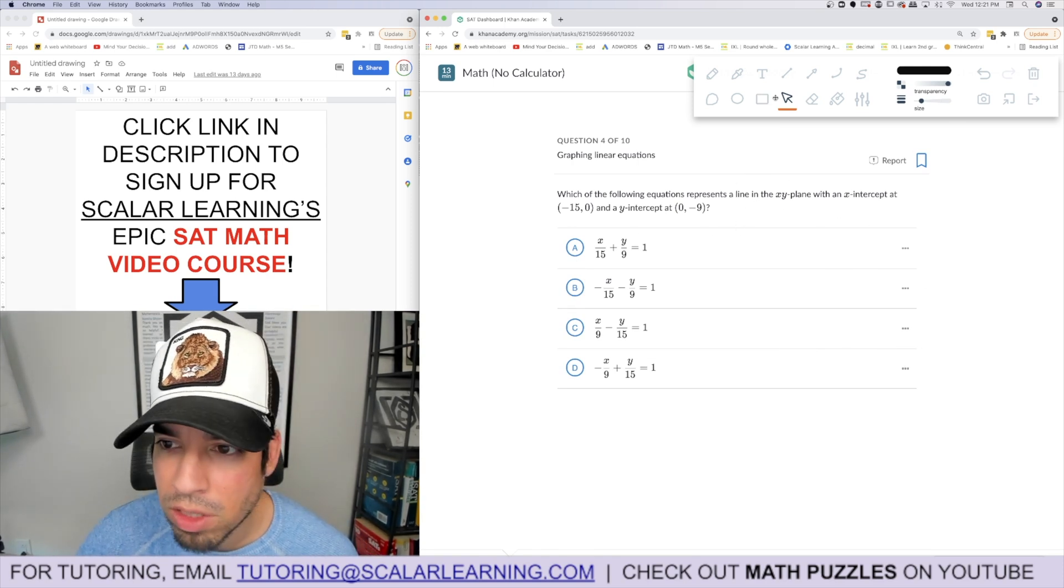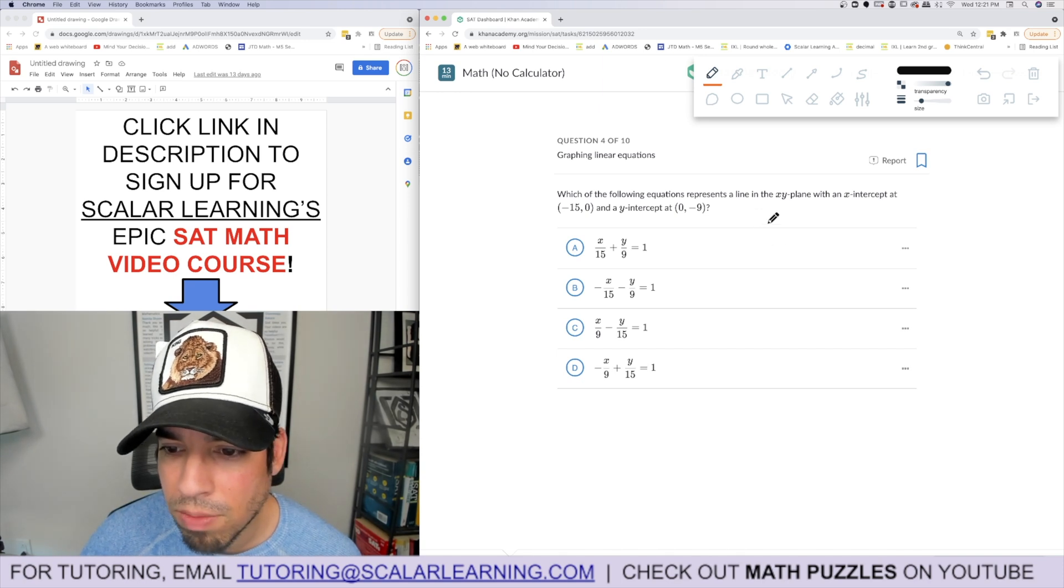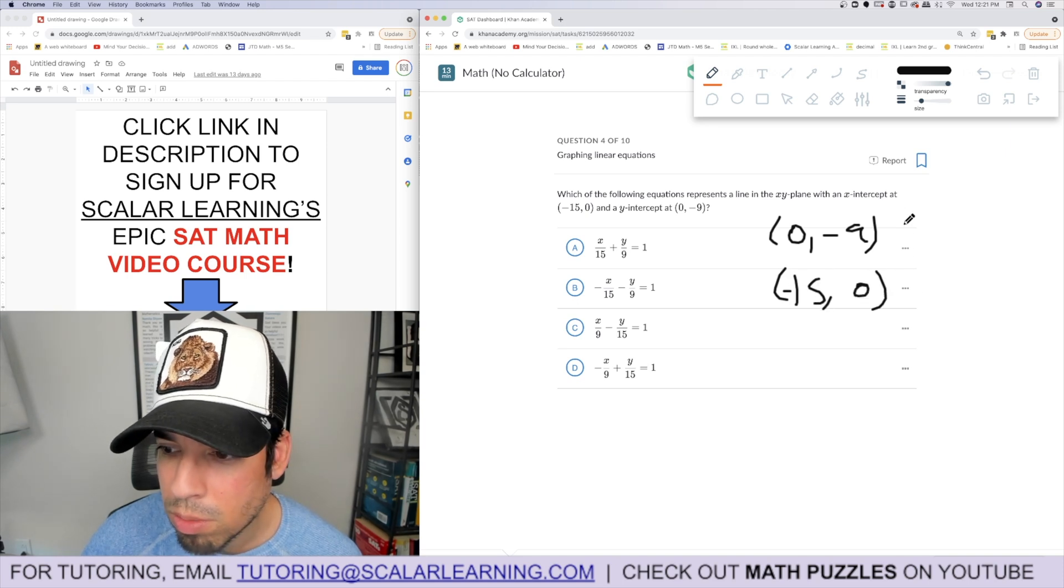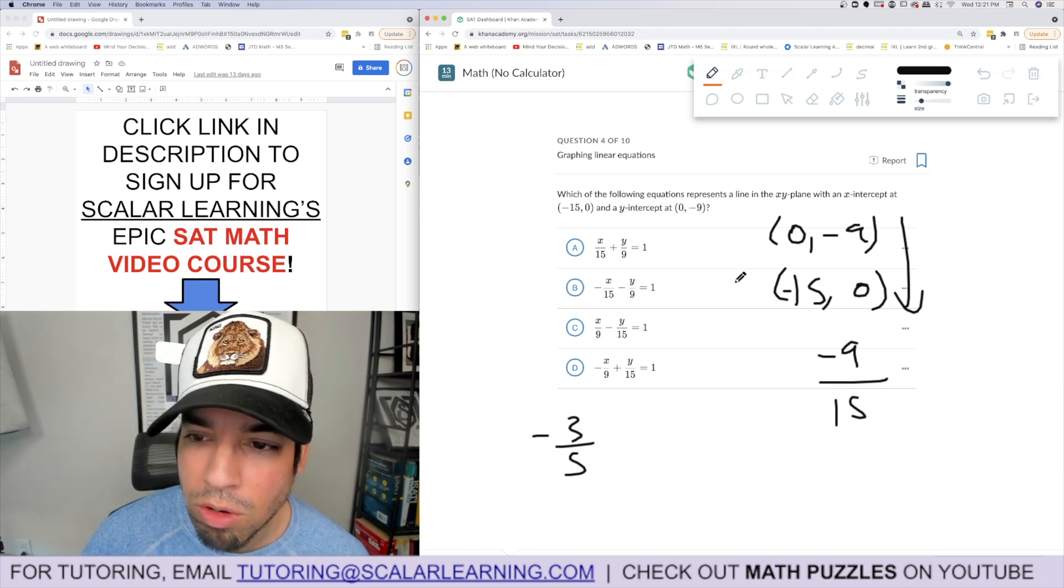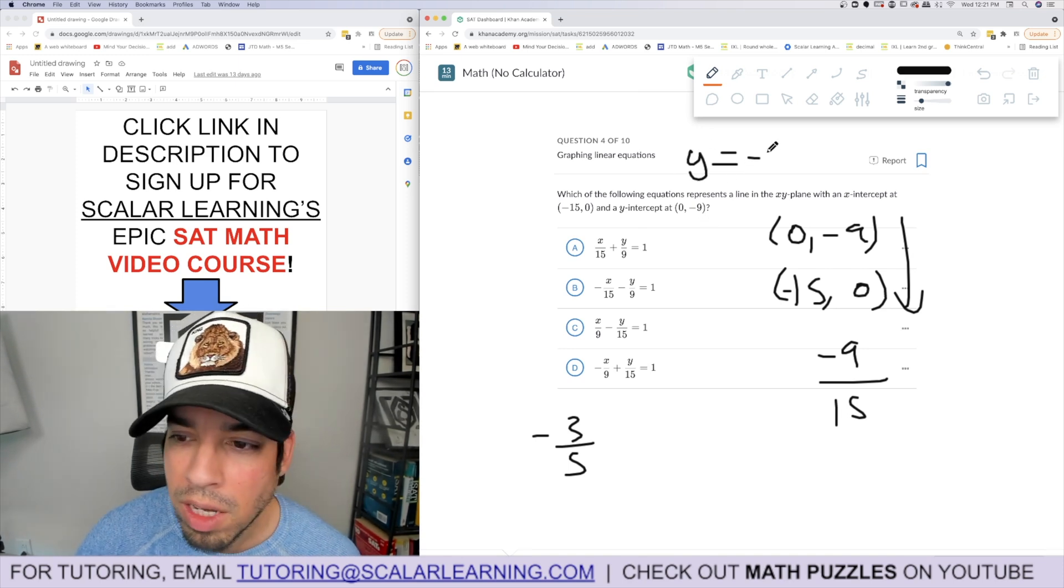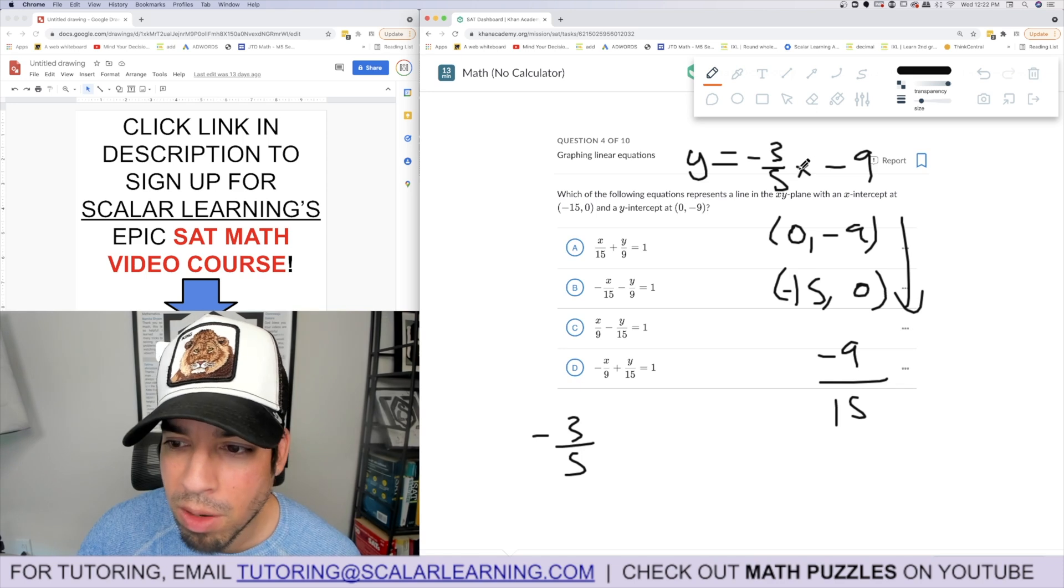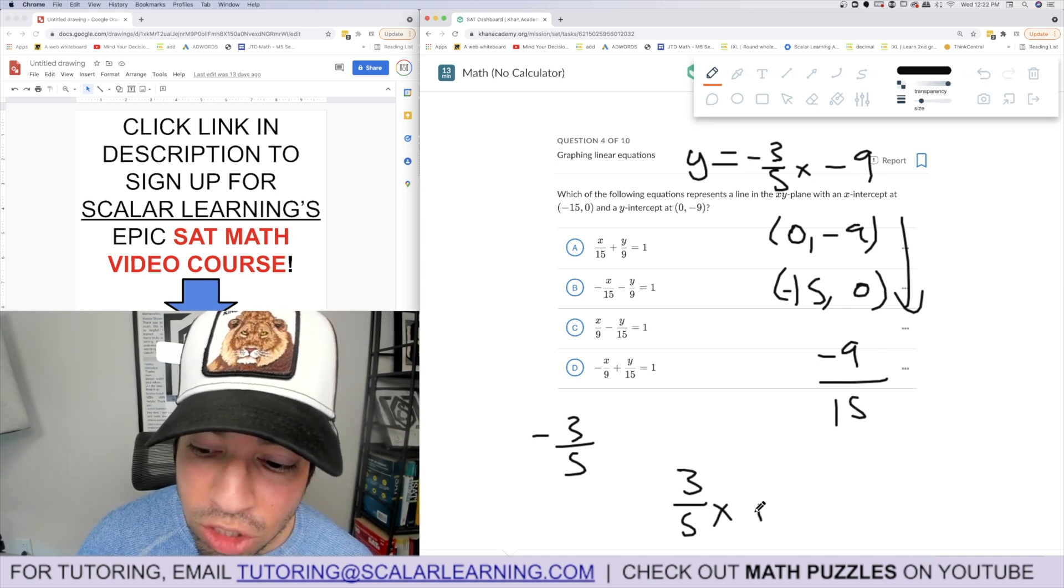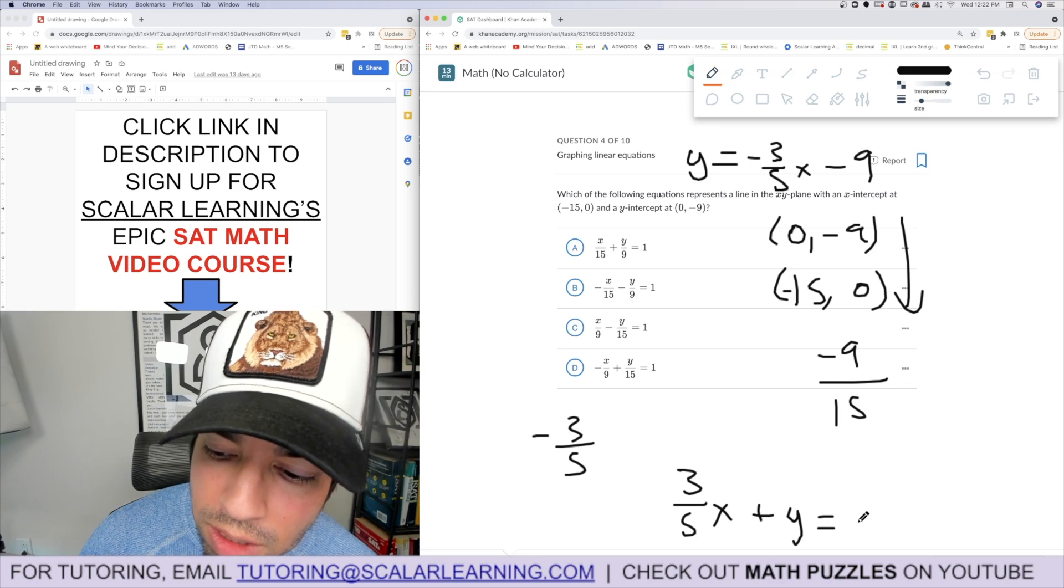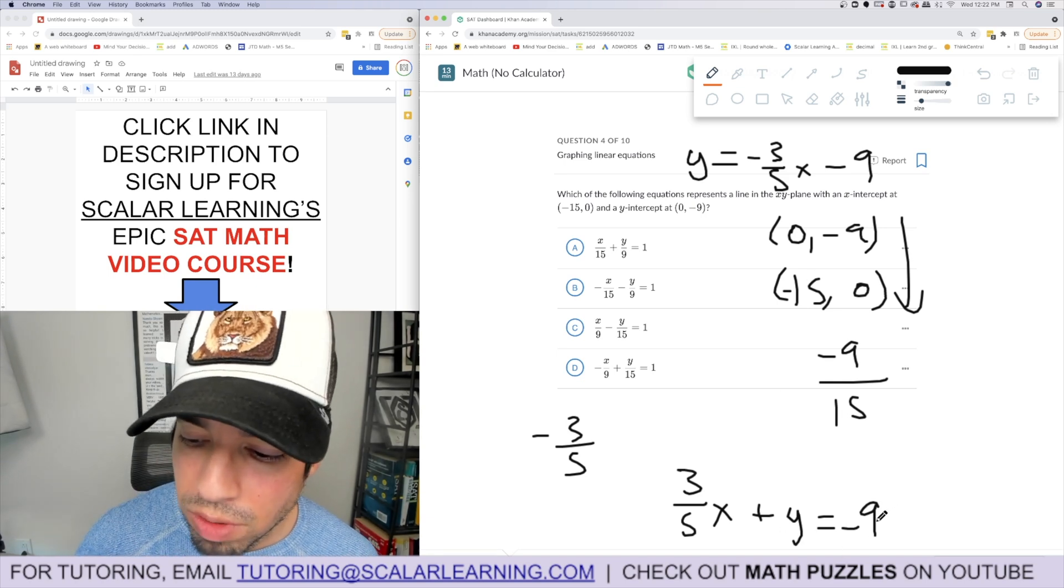Which of the following equations represents a line in the xy plane with the x intercept of that and y intercept of that? They gave it to us in very weird format but that's okay. I'm going to use my typical thing. I'm going to first calculate the slope, so I'll stack the coordinates like so, subtract down. I got negative nine over fifteen, that's negative divided by three, negative three-fifths is the slope. And I got the y intercept as negative nine, so it's y equals negative three-fifths x minus nine.